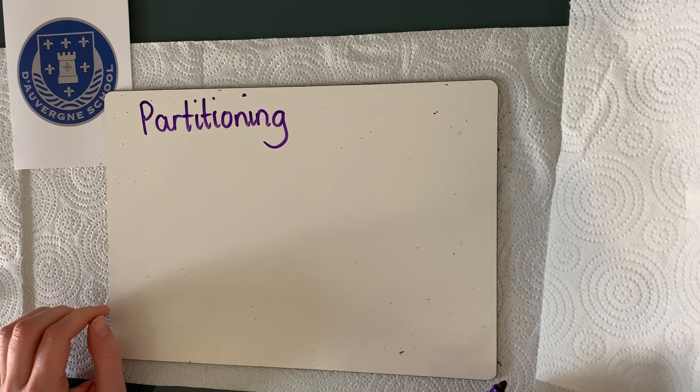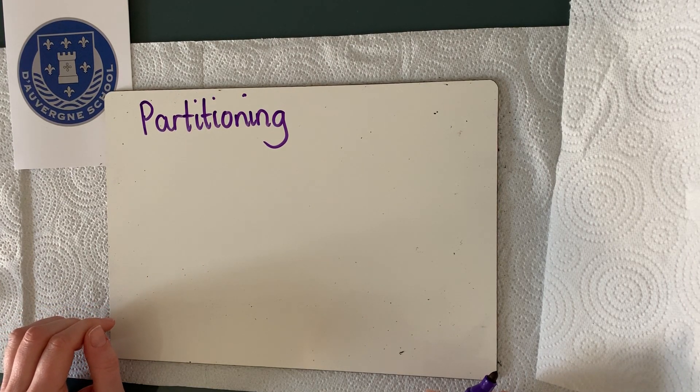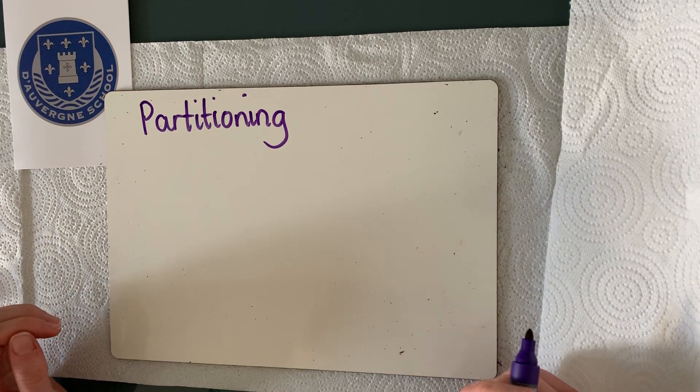Okay, so if we are partitioning, we are thinking about our place value. We're thinking about what each digit actually means, splitting it up and then completing each digit as it stands.